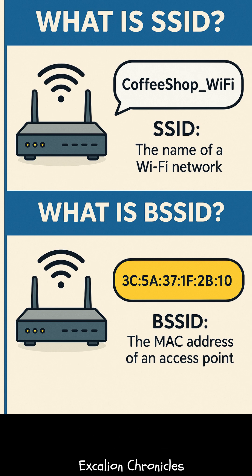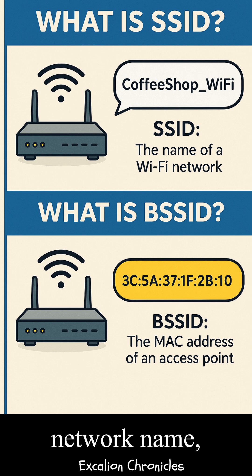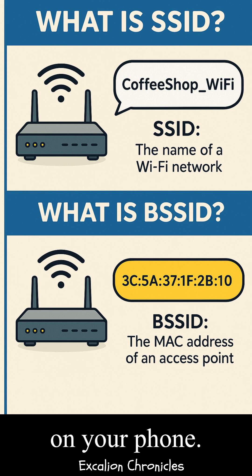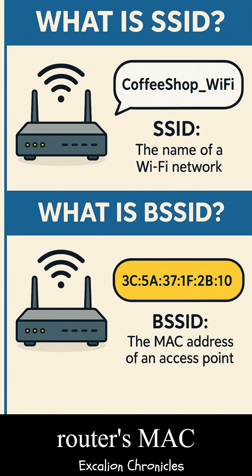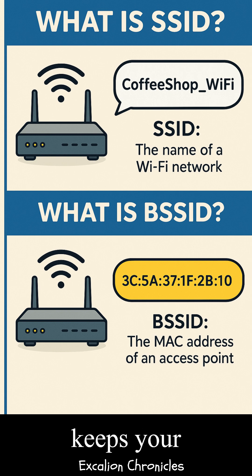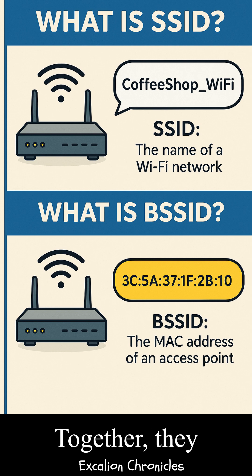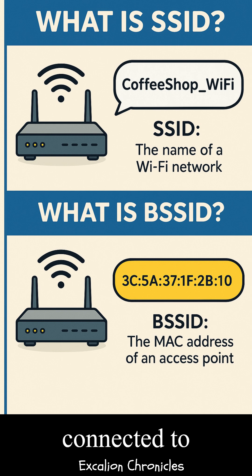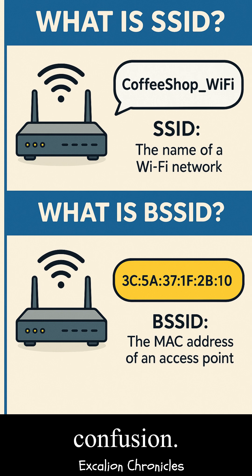So, in short: SSID equals network name — what you see on your phone. BSSID equals the router's MAC address — what keeps your connection smooth. Together, they help your device stay connected to the right Wi-Fi without confusion.